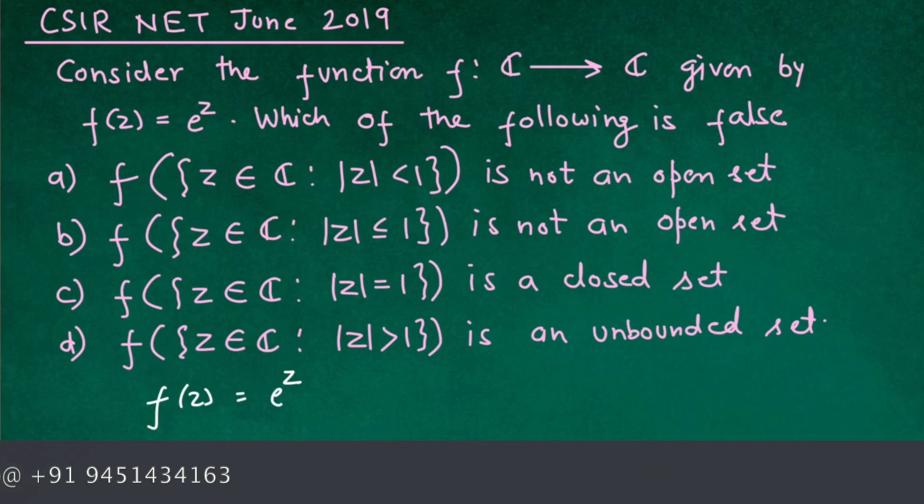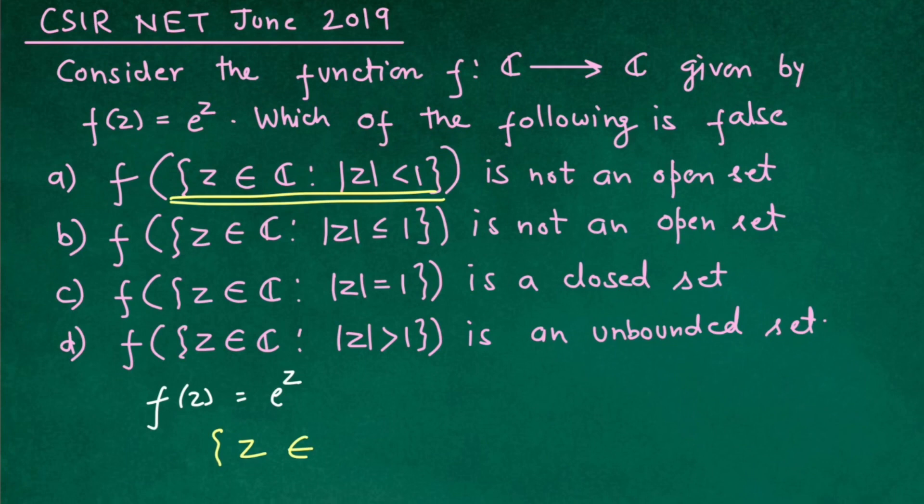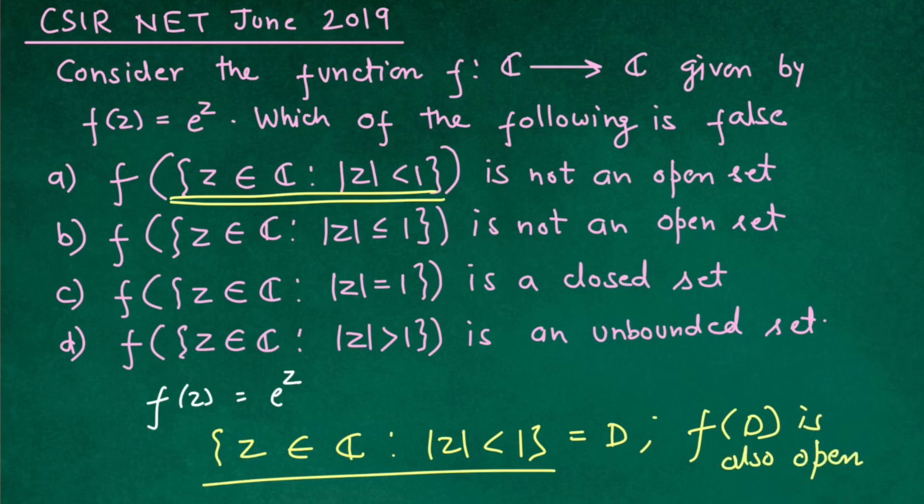If you see in option A, we can say that this set z from complex plane C such that its modulus is less than 1. This set is a unit disk and it is open. From the Open Mapping Theorem, f of D will also be open. But in option A it is given that it is not an open set. That means this statement is false.